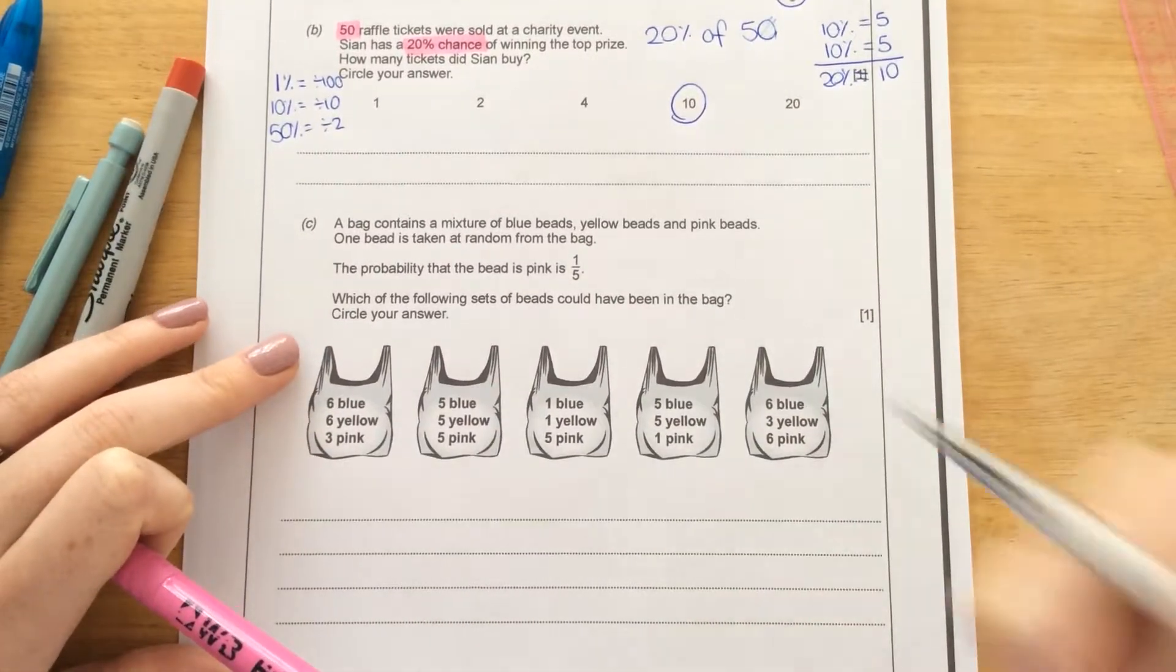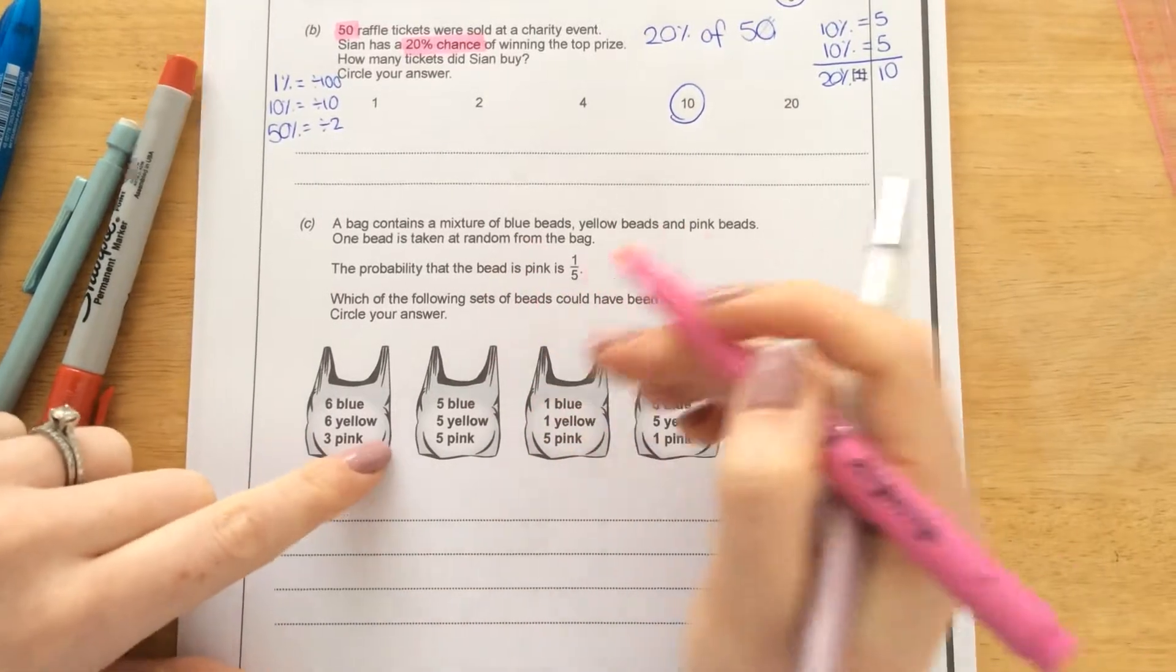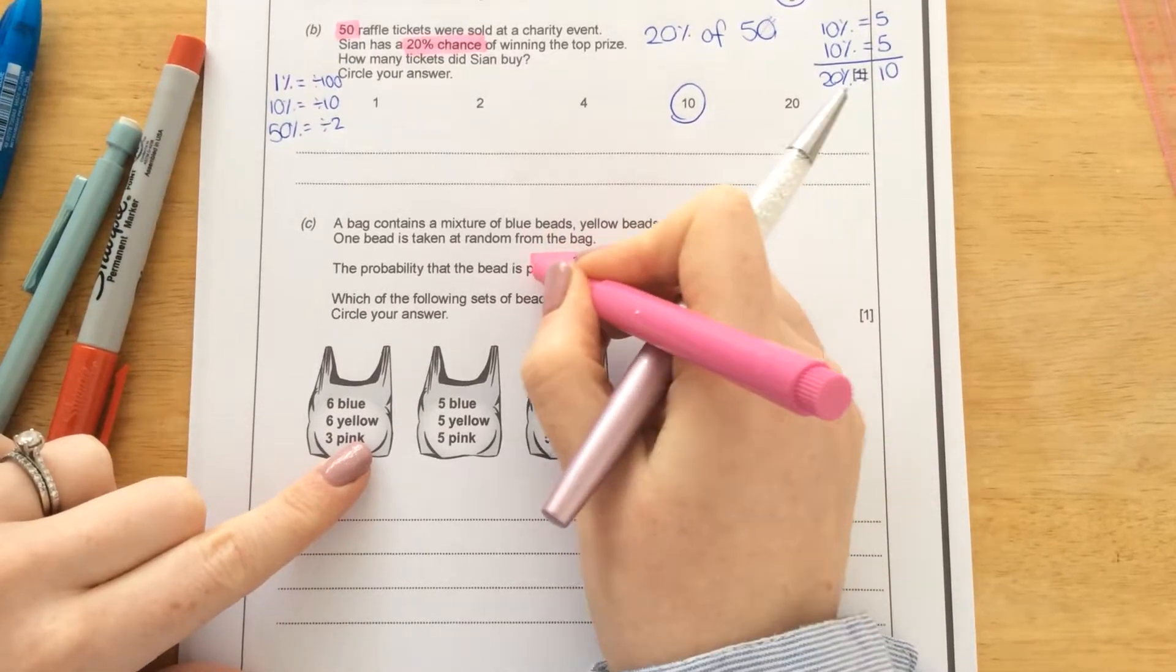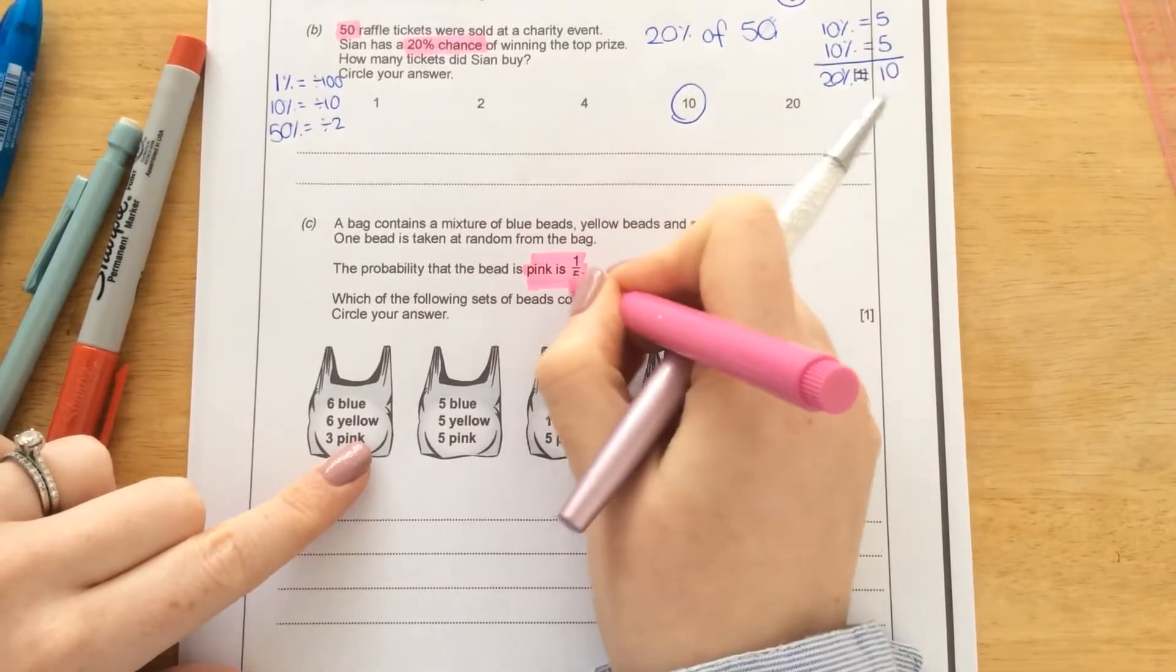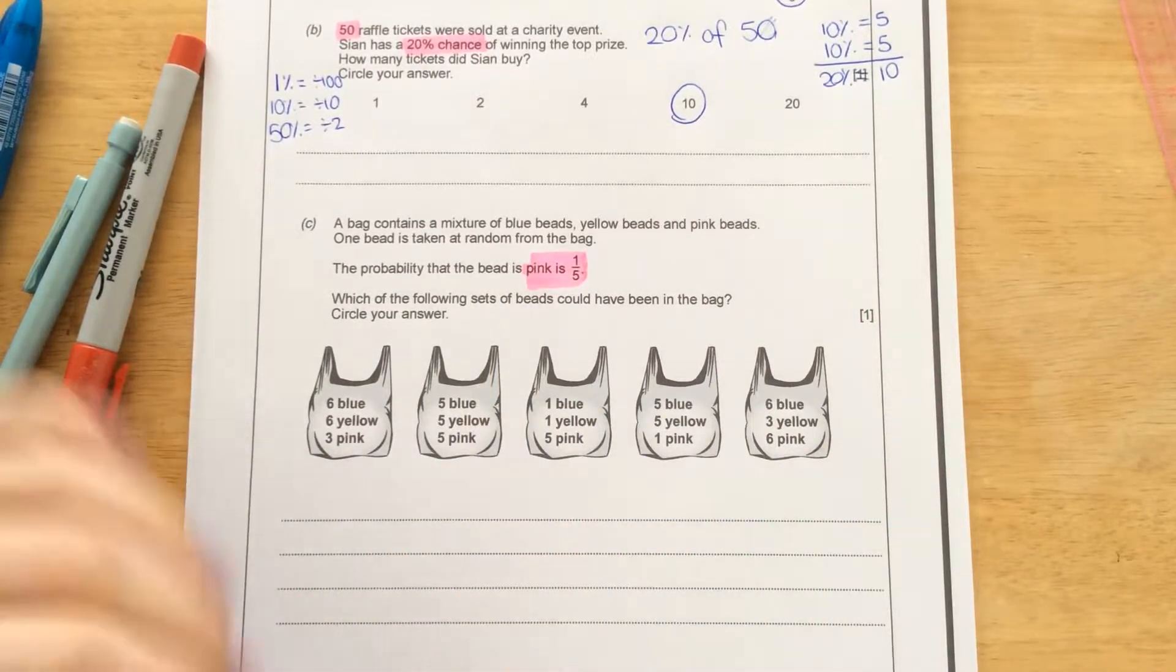Part C. A bag contains a mixture of blue beads, yellow beads, and pink beads. The probability that the bead is pink is 1 over 5, or 1 fifth. Which of the following sets of beads could have been in the bag? Circle your answer.